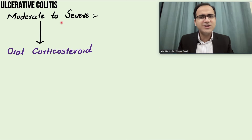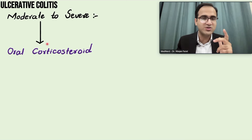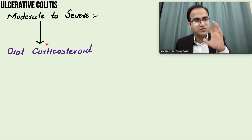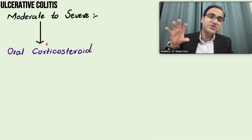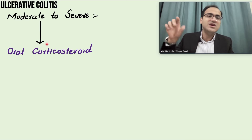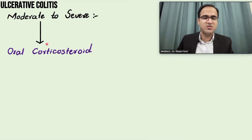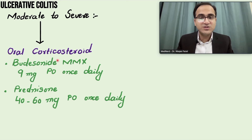In patients with moderate to severe ulcerative colitis, you start straight away from oral corticosteroids. In fulminant colitis it is IV corticosteroids; in moderate to severe colitis you go for oral corticosteroids; in mild to moderate you start with mesalamine and escalate if needed. Oral budesonide 9 mg orally once daily can be given for moderate to severe disease.